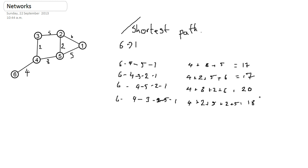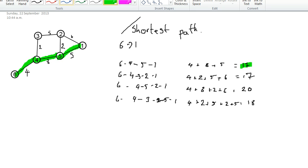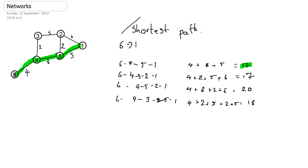So actually, I've got two shortest paths. I could go 6 to 4, 4 to 5, 5 to 1. So let me just get my highlighter and show that particular route. So if I go the green route, it has a total distance of 17. Whereas, if I go the purple route, 6 to 4, 4 to 3, 3 to 2, 2 to 1, that also has a distance of 17.